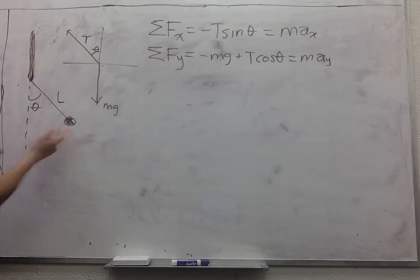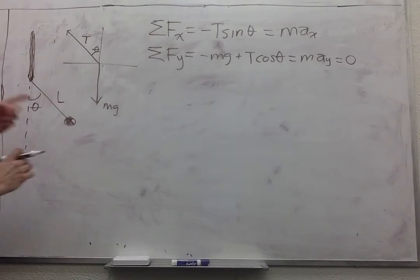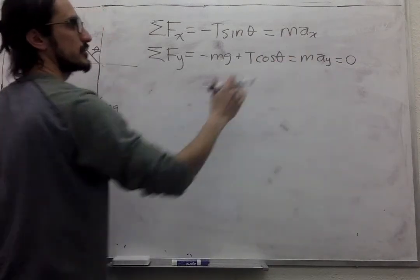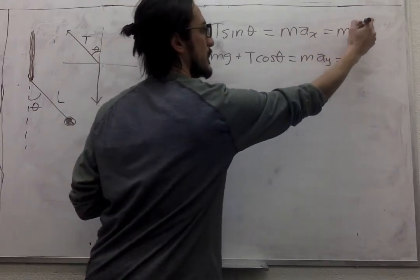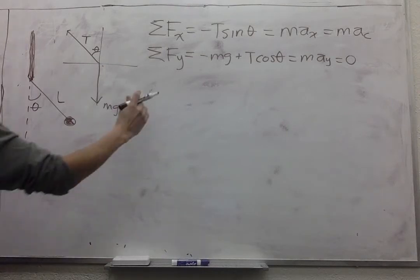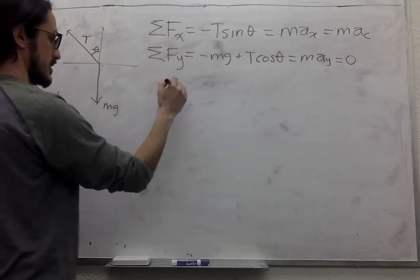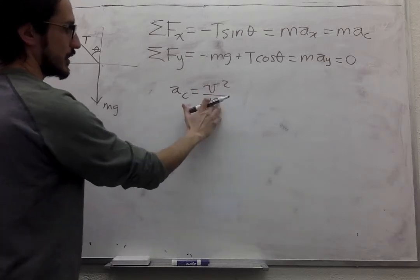This ball, if it is rotating at a constant angular velocity, isn't going to be moving in the vertical direction. So we know that this is equal to 0. But it is always changing its direction. So it has centripetal acceleration in X. So the centripetal acceleration is V squared over R.